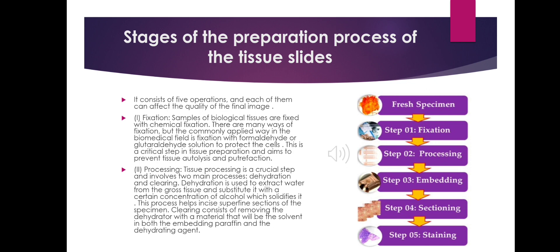So we are going to discuss all these topics one by one. Firstly, fixation. Samples of biological tissue are fixed with chemical fixation. There are many ways of fixation, but the commonly applied way in the biomedical field is fixation with formaldehyde or glutaraldehyde solution to protect the cells. This is a critical step in tissue preparation and aims to prevent tissue autolysis and putrefaction.